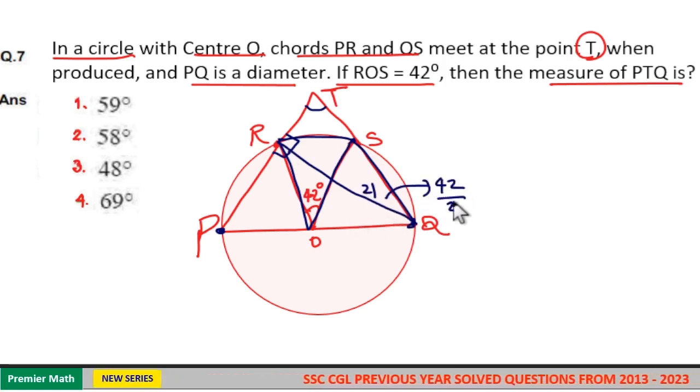Arc ROS creates 42 degrees at the center, then the same arc creates 21 degrees at any point on the circumference of the circle. Here point Q is on the circumference, so this angle is 21 degrees.